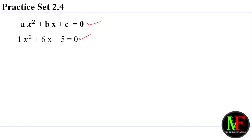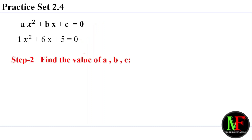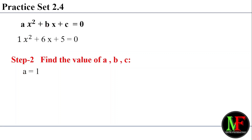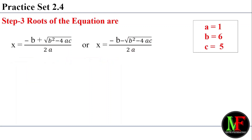Step number 2: find the value of a, b, and c. The value of a is equal to 1. B value is equal to 6. And C is equal to 5. We have B equal to 6 and C equal to 5. Now apply these three values in the formula.